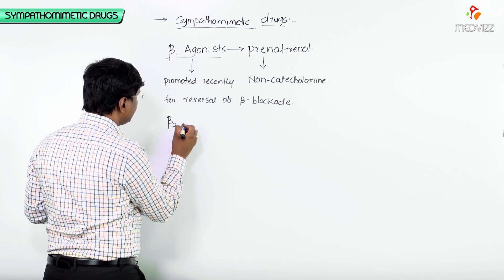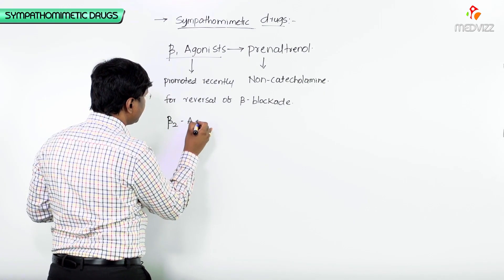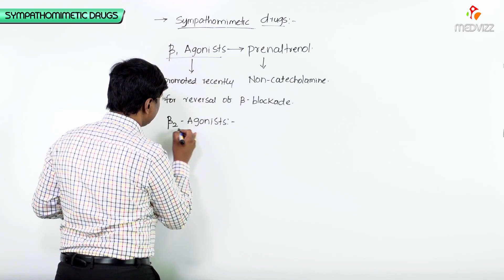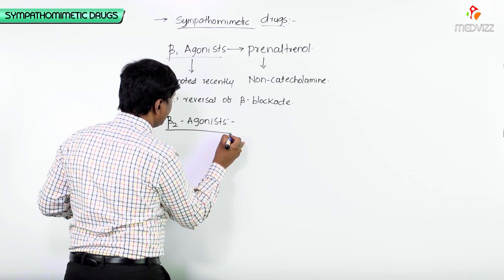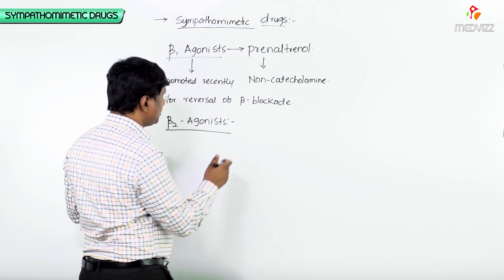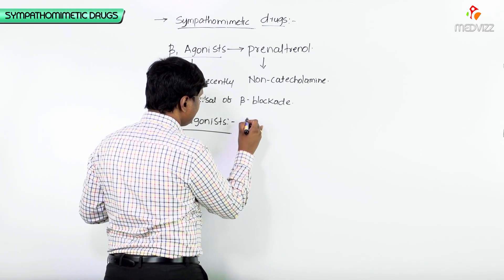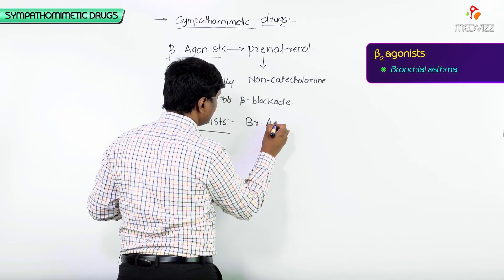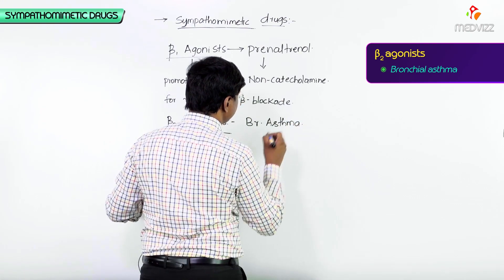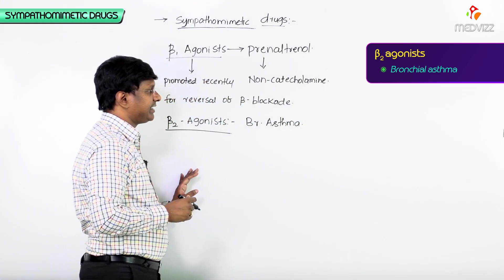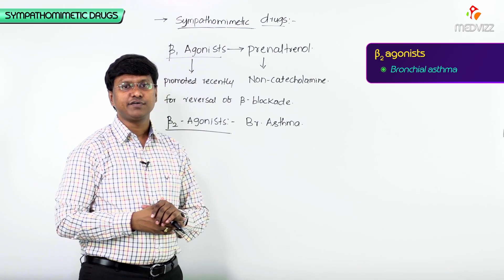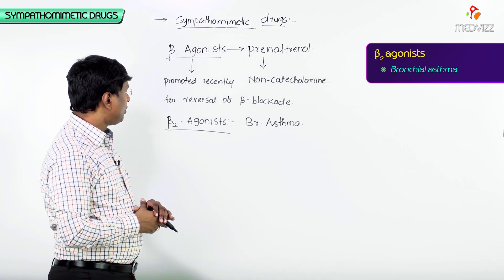Then we have the beta2 agonists. Now, where are these beta2 agonists used? Remember, they are useful mainly in bronchial asthma. By acting on beta2 receptors which are present in the bronchus, there will be bronchodilatation, and thereby they are used in the treatment of bronchial asthma.